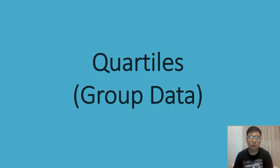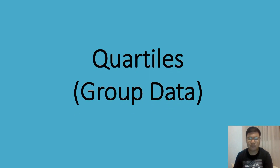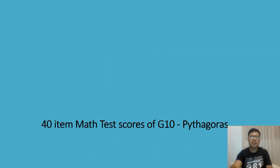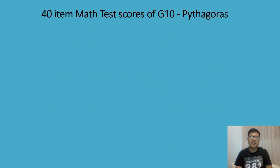We are already done discussing how to compute for the quartiles of ungrouped data. So in this lesson, we will be discussing how to compute the quartiles for grouped data. Let's have an example: these are the scores of the students of G10 Pythagoras in a 40-item math test.